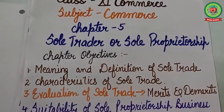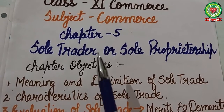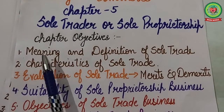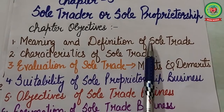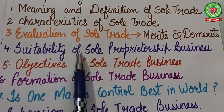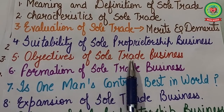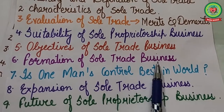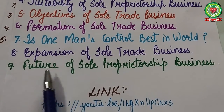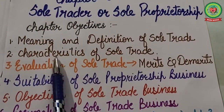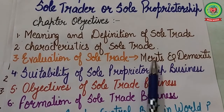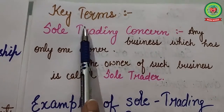Hello students, hope you are well and working hard to achieve your goals. Today we will start our next chapter — Chapter 5: Sole Trader or Sole Proprietorship. The learning objectives of this chapter are to understand the meaning and definition of sole trade, characteristics of sole trade, and evaluation of sole trade — its merits and demerits, and suitability of sole proprietorship.